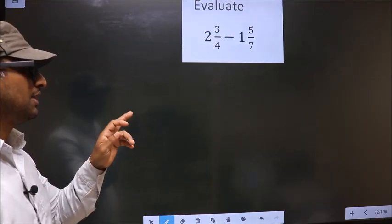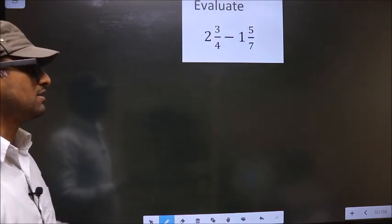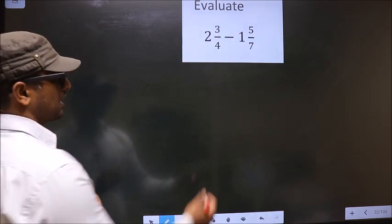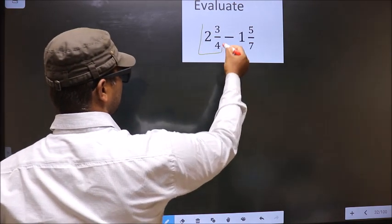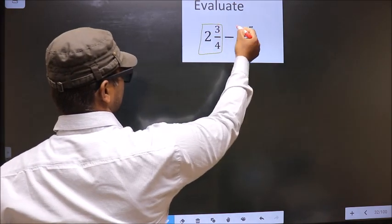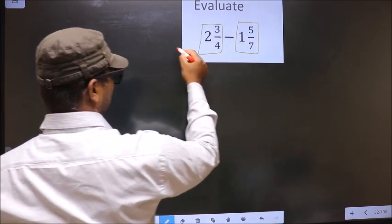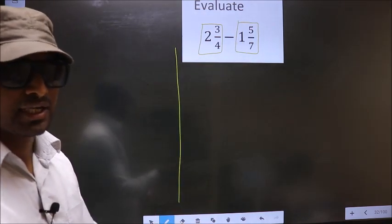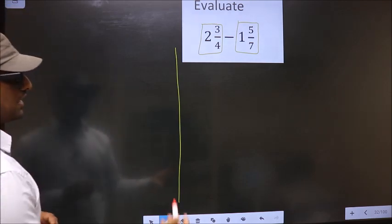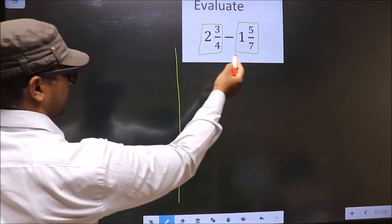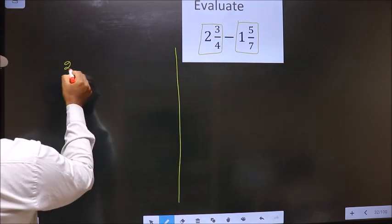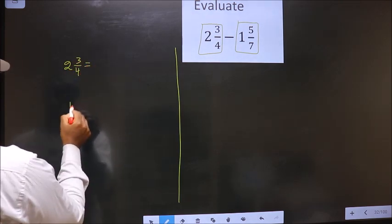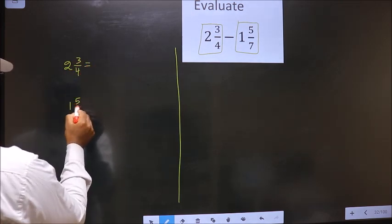Evaluate 2 and 3/4 minus 1 and 5/7. First, we should convert these mixed fractions into improper fractions. So, the given mixed fractions are 2 and 3/4 and 1 and 5/7.